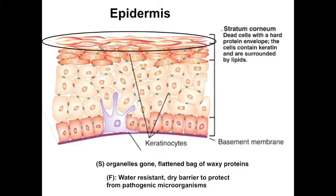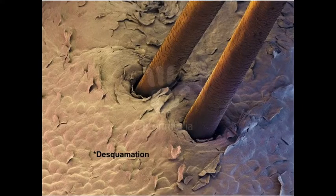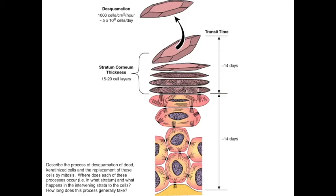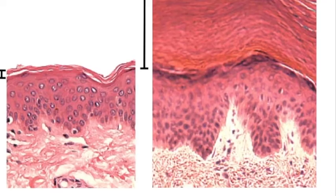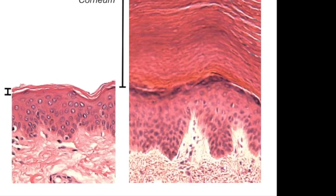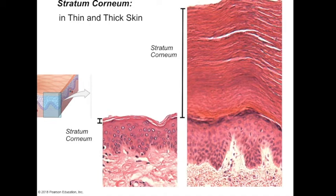The dry barrier also provides protection from pathogenic organisms, as most of them prefer the moist environment found deeper inside the body. These layers of dead cells are shed regularly — they are the dandruff shed from the scalp and the flakes from dry skin. The process of dead cells flaking off is called desquamation, and your skin replaces itself about every month or so. The stratum corneum is the main difference between thin and thick skin — thick skin has an increased number of stratum corneum layers.